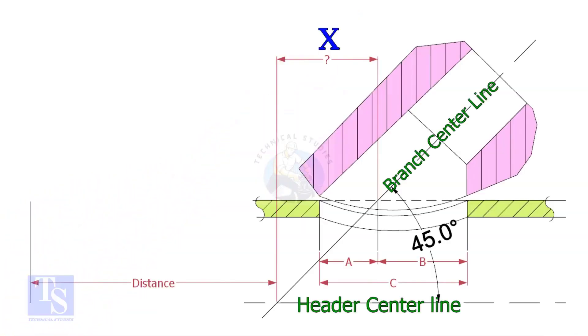Most commonly, lateralettes are used for 45 degree branch connections. In a drawing, the distance to the center of a lateralette is given from a certain point.